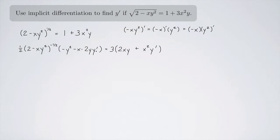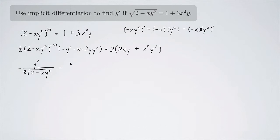So first thing I'll do is distribute this through because there's a y prime hidden in here, and this is going to be a square root. This is going to look like we're going to have a minus y squared times this thing — so a minus, and there'll be a 2 times the square root of 2 minus xy squared in the denominator, and then y squared up top. Then if I multiply this through, the 2 cancels with that half. It is going to be negative, so I'm going to put a minus sign — upstairs it's going to be xy·y prime, and downstairs the square root of 2 minus xy squared. And that's going to equal — multiplying the 3 through — 6xy plus 3x squared y prime.